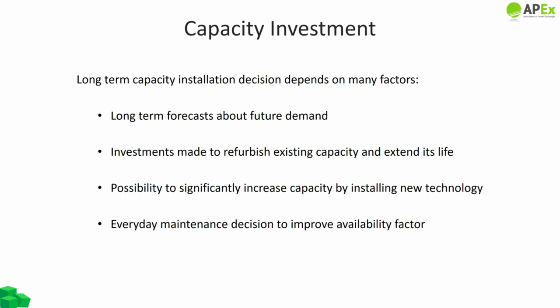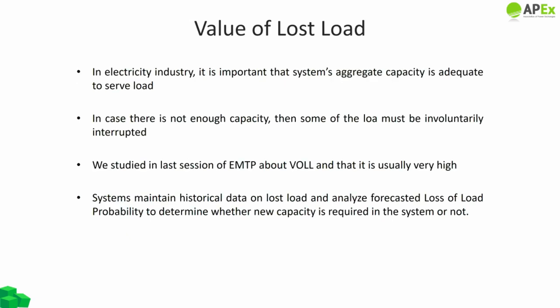Other capacity decisions are shorter term: investments can be made to refurbish existing capacity and extend its useful life, or to significantly increase the capacity of an existing plant by installing new technology. Everyday maintenance decisions are also capacity decisions — a well-maintained plant is less likely to have unplanned outages, giving it a much higher availability factor. If a system has excess capacity, it may make economic sense to mothball or retire some capacity. It is important to ensure the system's aggregate capacity is always adequate to serve the load, accounting for unplanned outages and uncertainty about load growth.